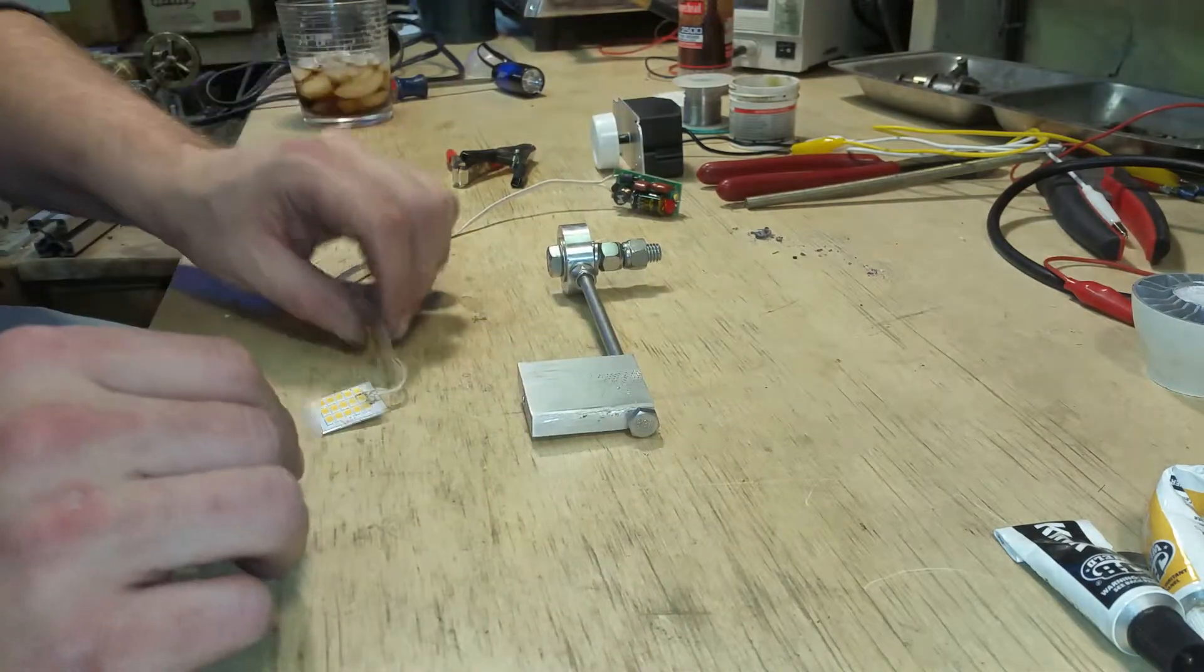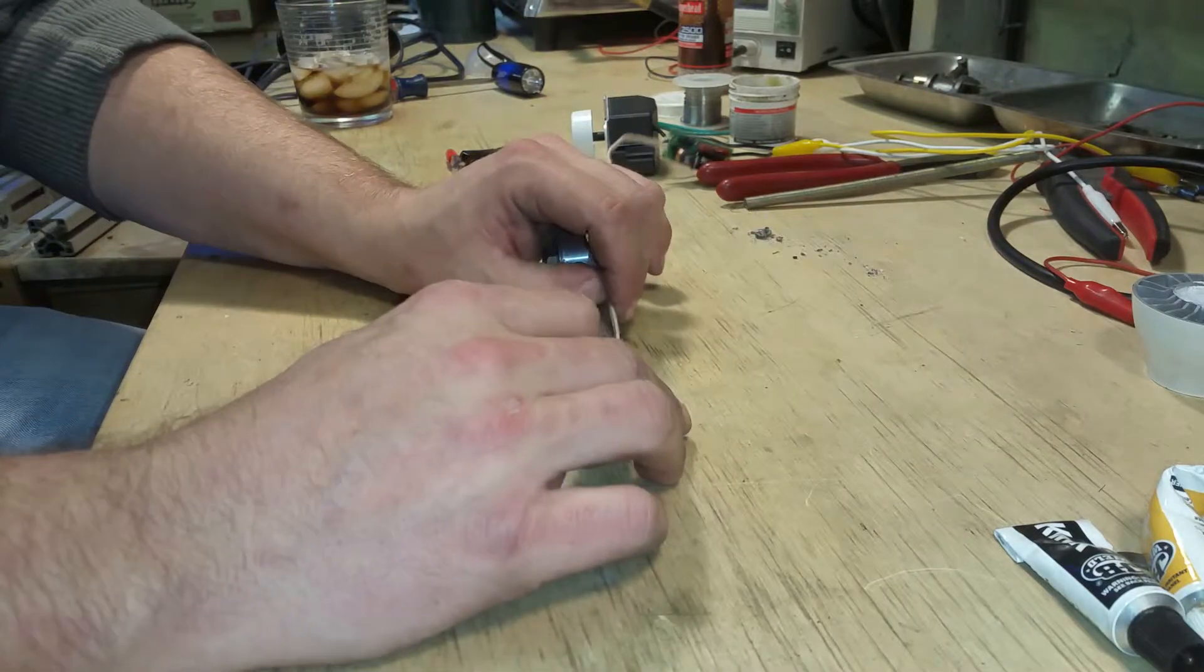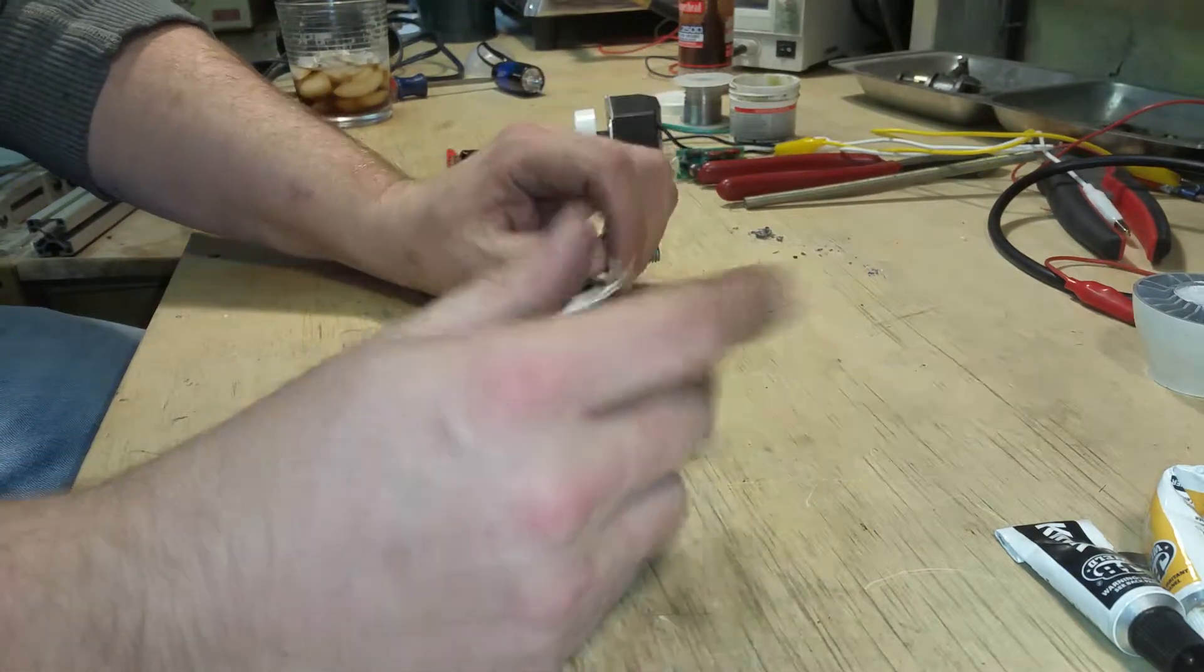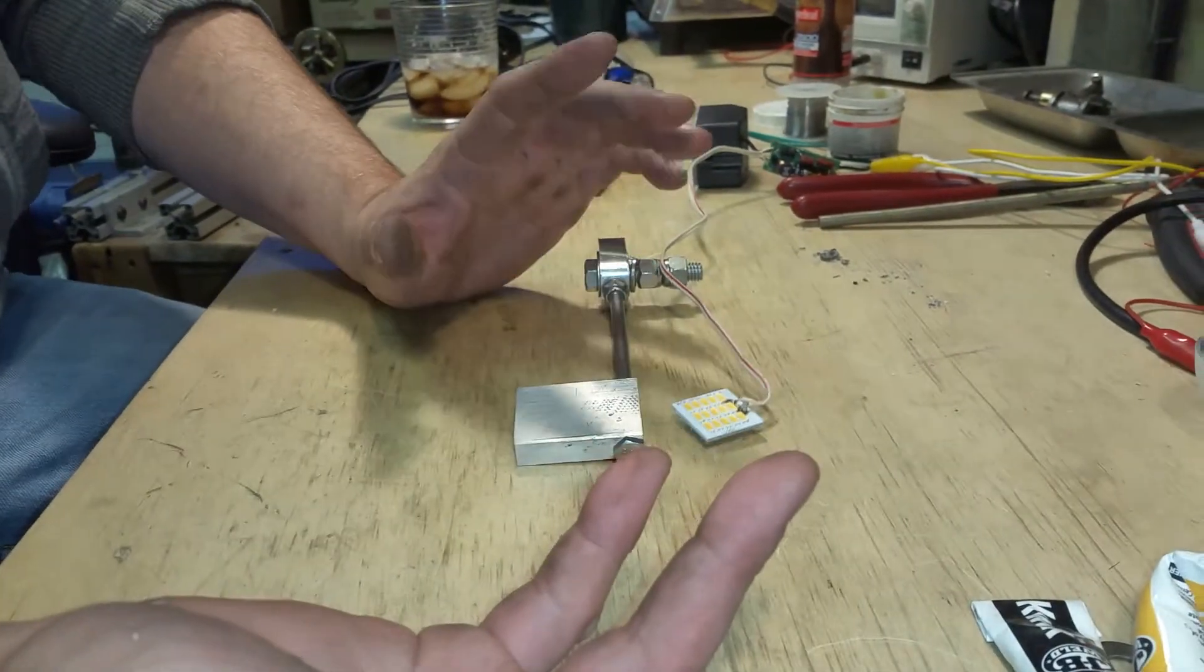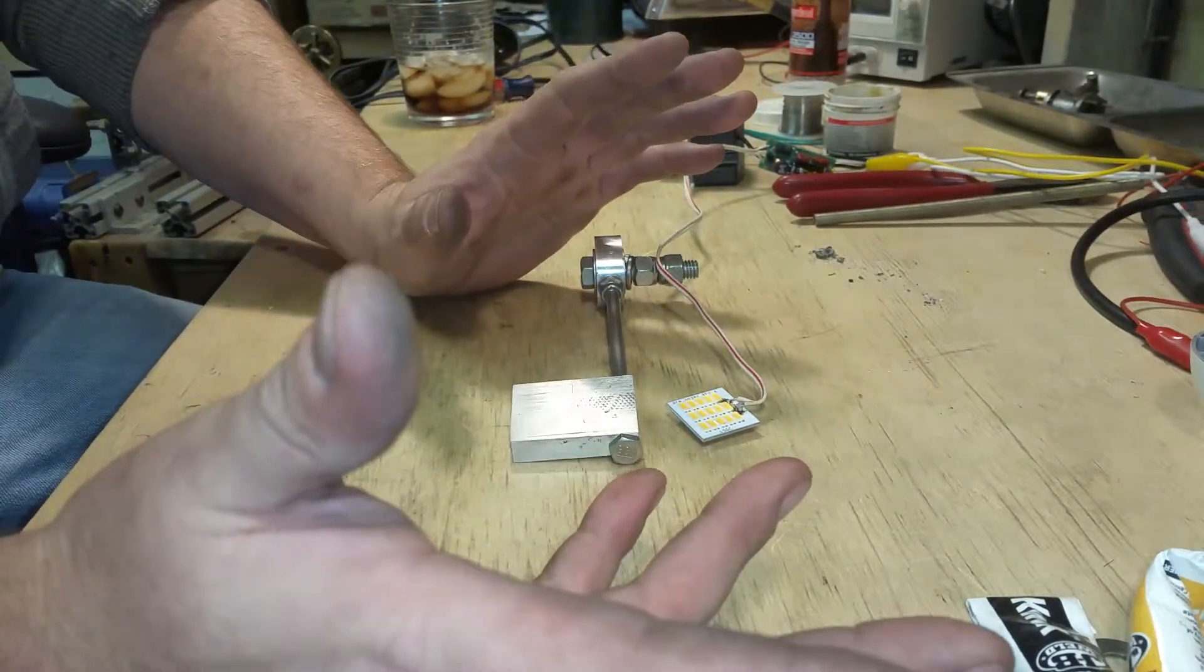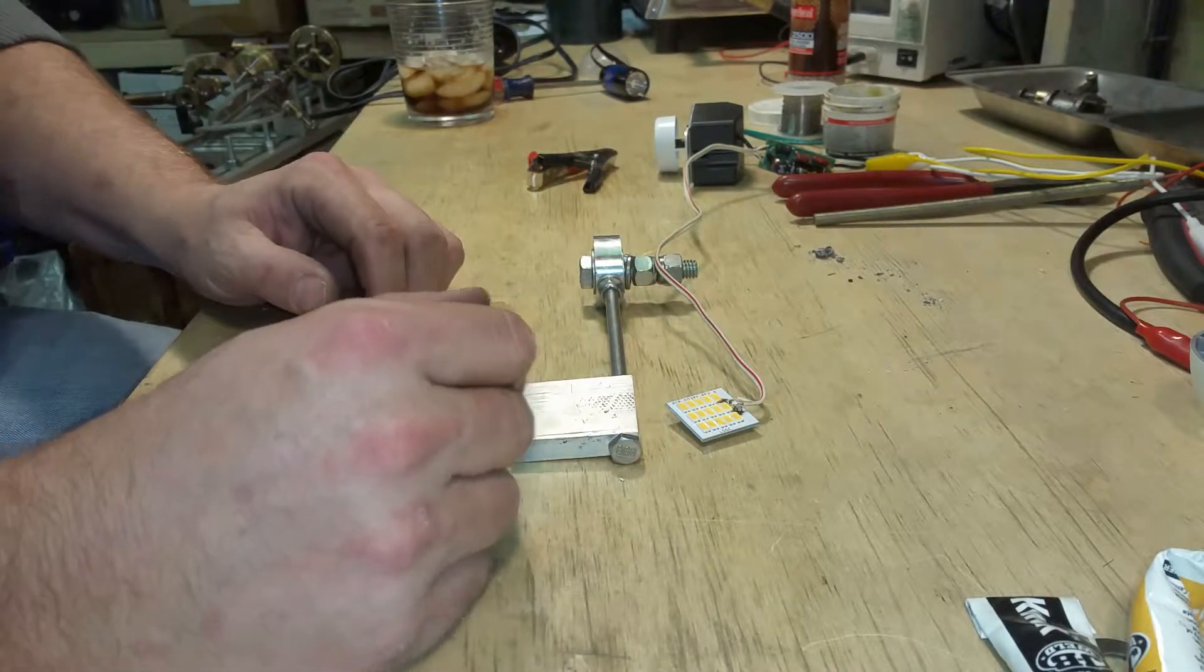So what I'm going to do now is use JB Weld, which holds up to - I can't remember - 300 or 400 degrees. I hope it doesn't ever get that hot. I don't know if this is a thermal transfer or a thermal insulator, but since we're just doing this off the cuff, we'll just assume that it's going to work.